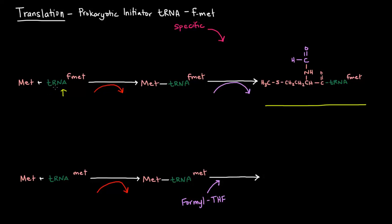They have a tRNA that's specific for formylated methionine, so this is their initiator tRNA. When methionine joins tRNA that is specific for formylated methionine, it joins to form this aminoacyl tRNA here.